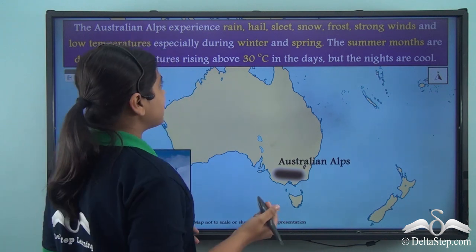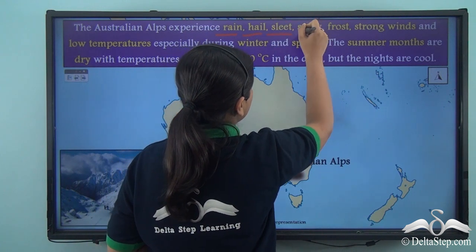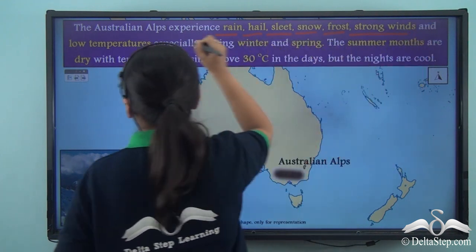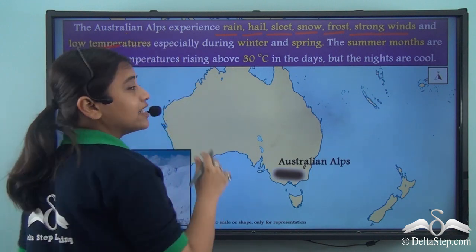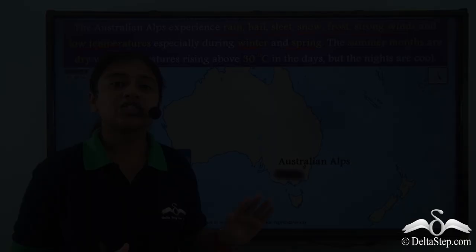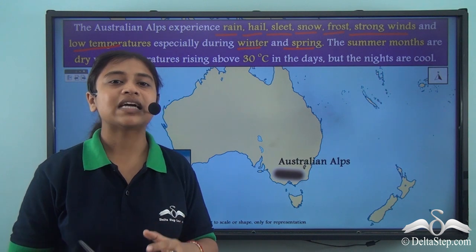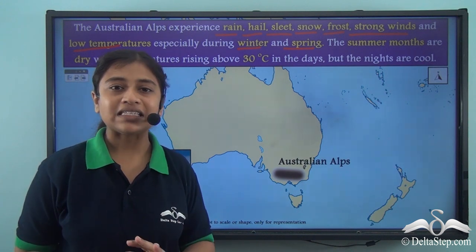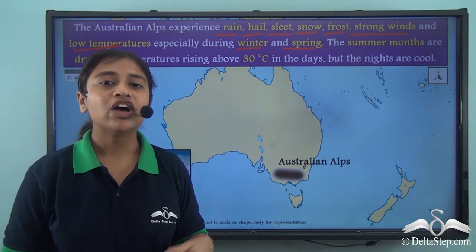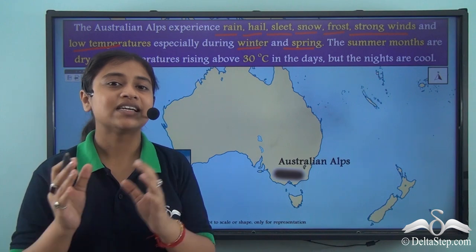The Australian Alps experiences rain, hail, sleet, snow, frost, strong winds and low temperatures especially during the winter and spring season. This region experiences a mountain type of climate with no dry season and good annual precipitation in the form of snow, sleet and frost, especially during winter and spring season.